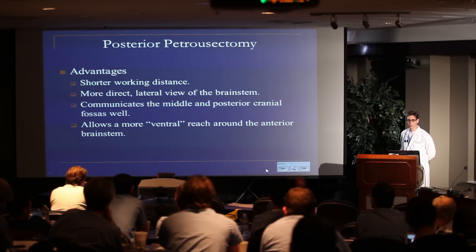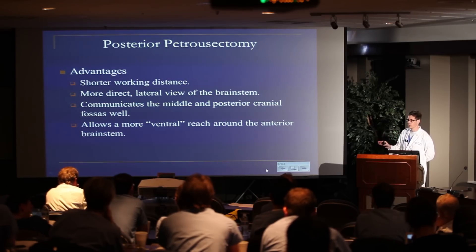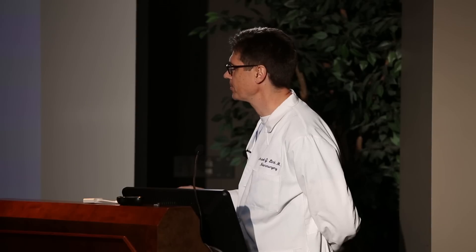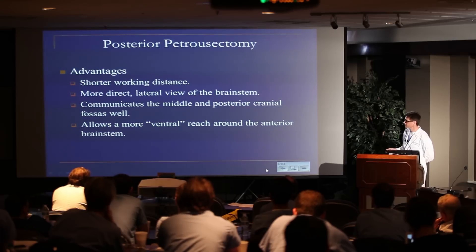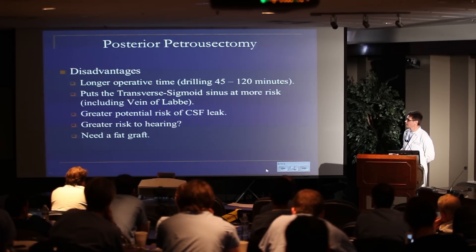It certainly gives you a more direct lateral view of the brainstem. It communicates the middle and posterior fossa, because you cut the tentorium — as Franco will go over. You can cut the tentorium from a retro-sigmoid approach from underneath, but the pre-sigmoid approach is certainly an easier way to do that, and it also allows a bit more ventral reach around the anterior brainstem.